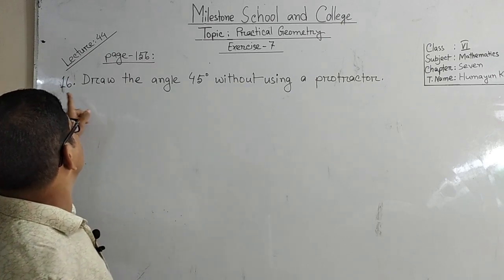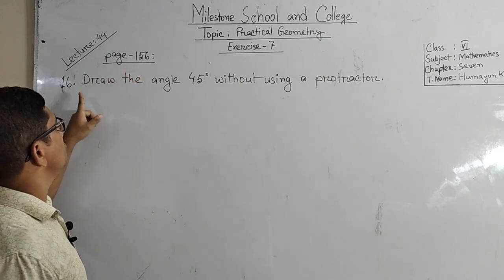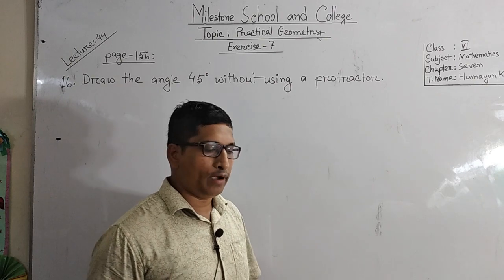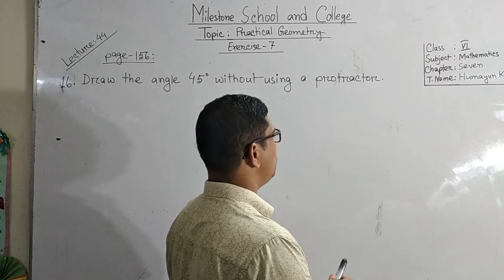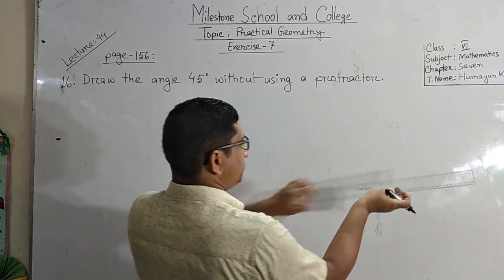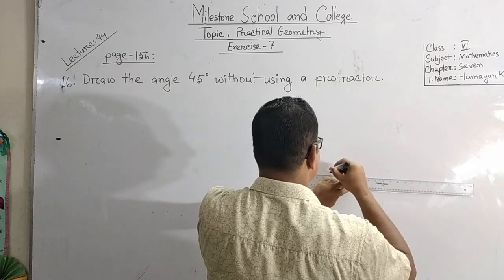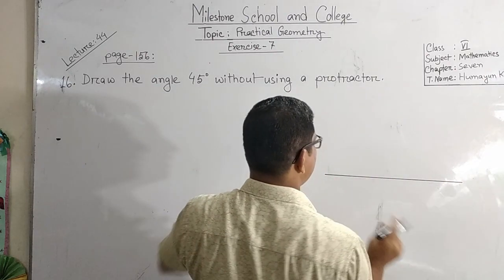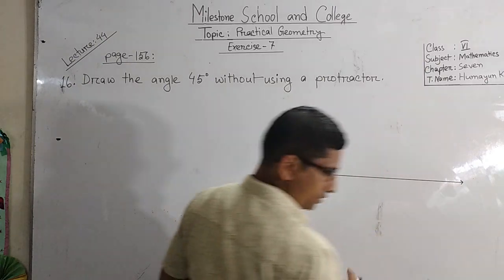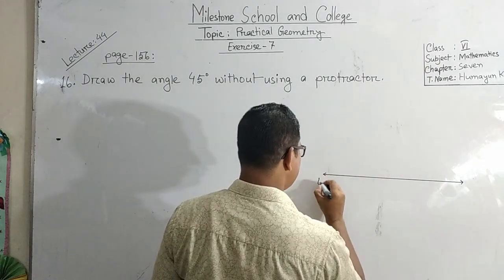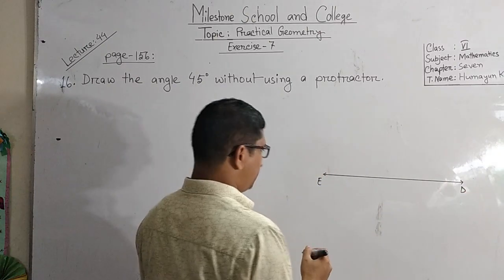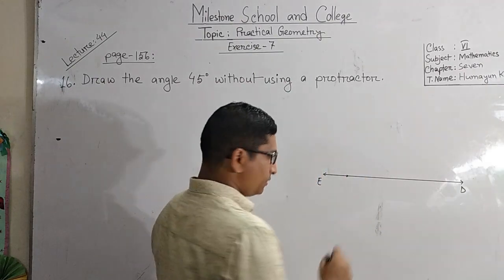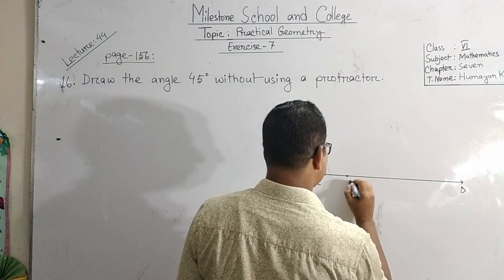Our next number, page number 156: draw the angle 45 degrees without using a protractor. Now look at here - how we will draw a 45 degree angle. At first we will take a line. Suppose this line is ED. Here, mark a point on line ED. Suppose this point is B.